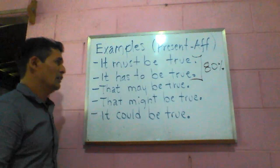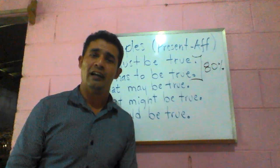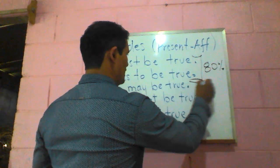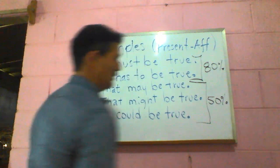If you are 80% sure that something is true, you can use 'must' or 'have to.' For example, if you say 'it must be true,' you have an 80% certainty. If you are not so sure about this, you can use 'may,' 'might,' or 'could' — here you have a 50% certainty.